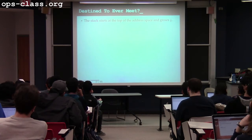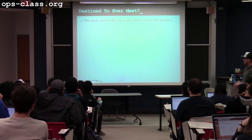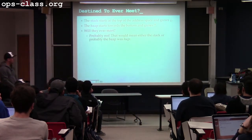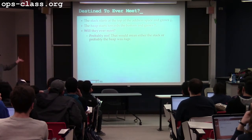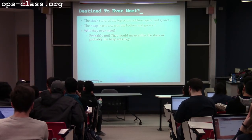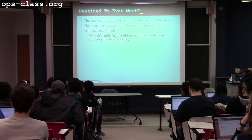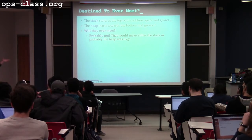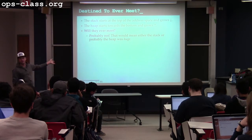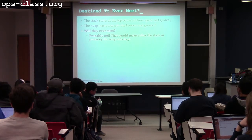The stack starts at the top of the address space and grows down. The heap typically starts somewhere in the middle and grows up. This is fine because there's a lot of address space — 2 or 4 gigabytes. By the time the stack and heap meet, something has gone wrong: either an enormous heap or completely out-of-control recursion. Practically, you'll hit a stack limit and the program will crash before that.